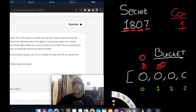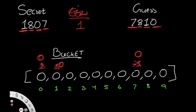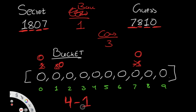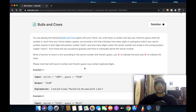A bull is when digit and position both match — sorry for the earlier mistake. The cow formula is: cows = len(secret) - bulls - sum(values > 0 in bucket). Here, len(secret) = 4, bulls = 1, and no bucket values are greater than zero, so: 4 - 1 - 0 = 3 cows. Correct!